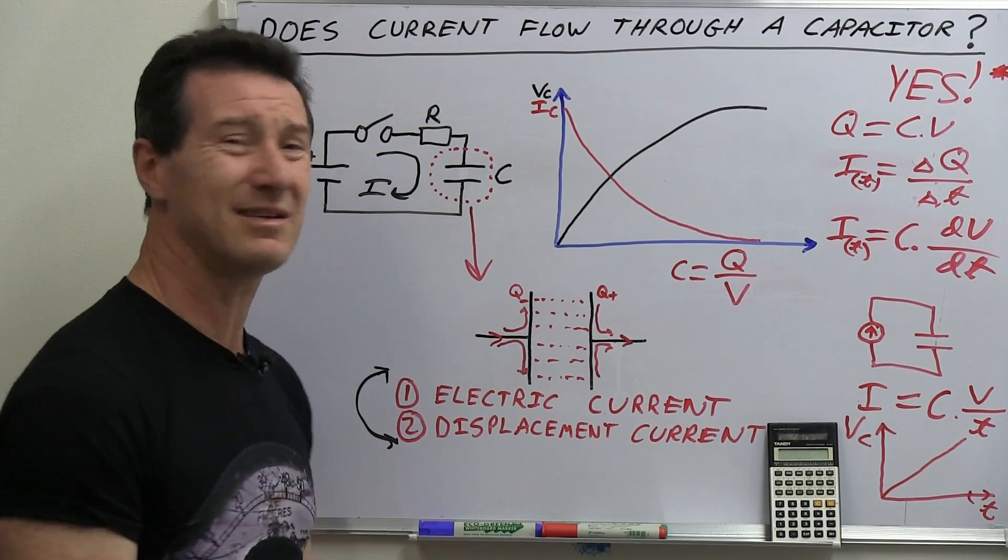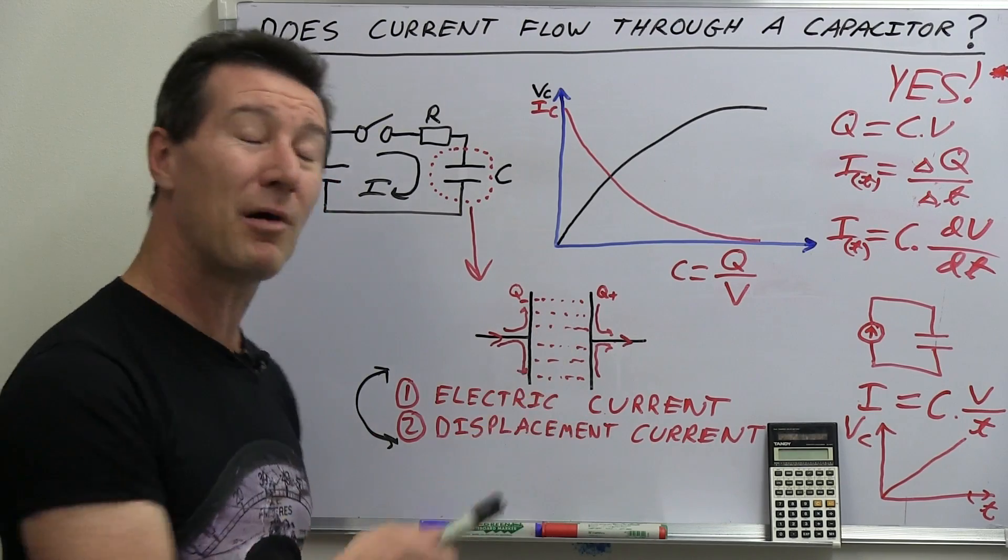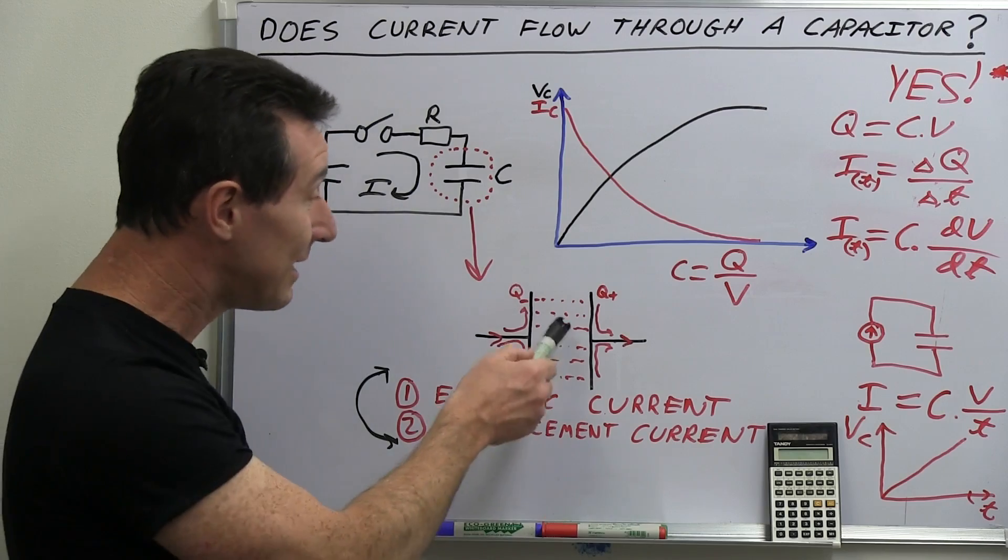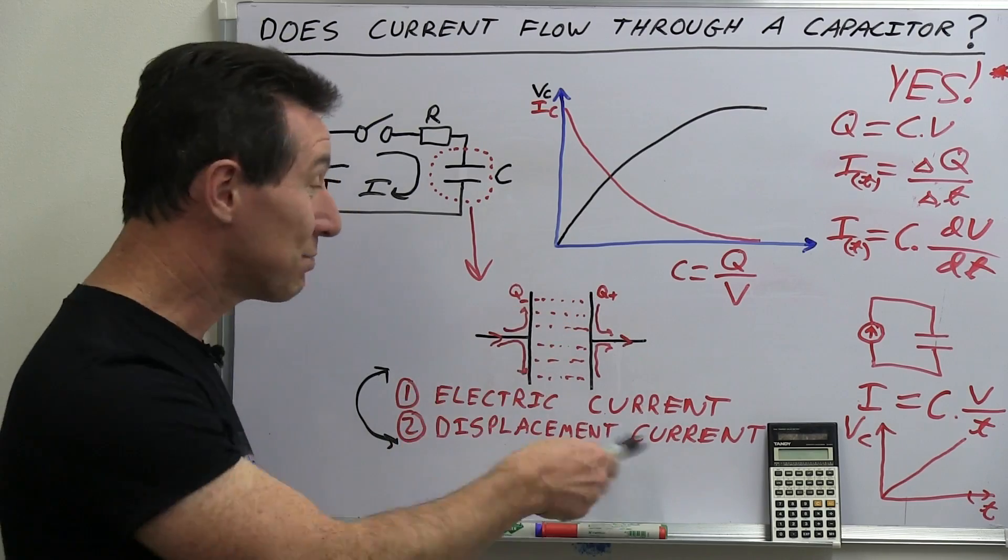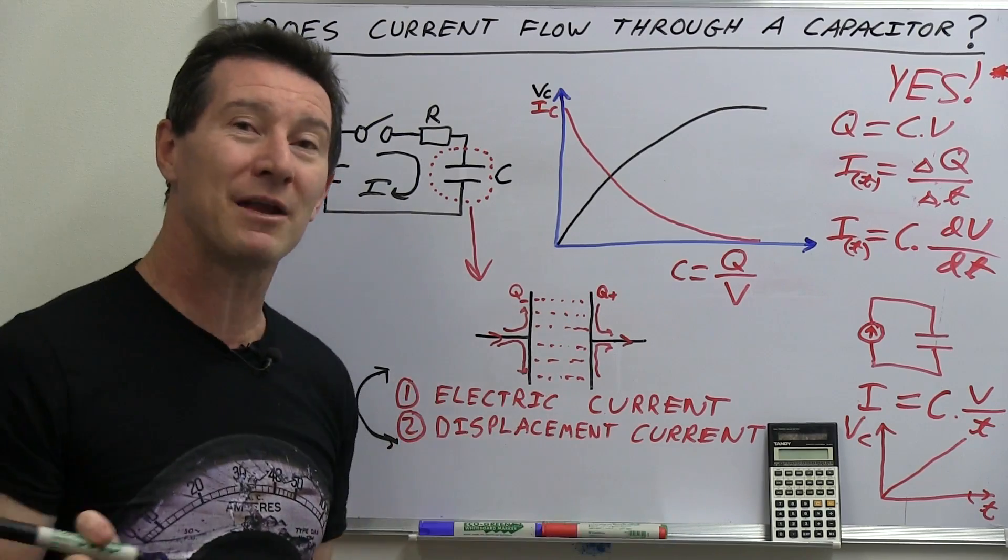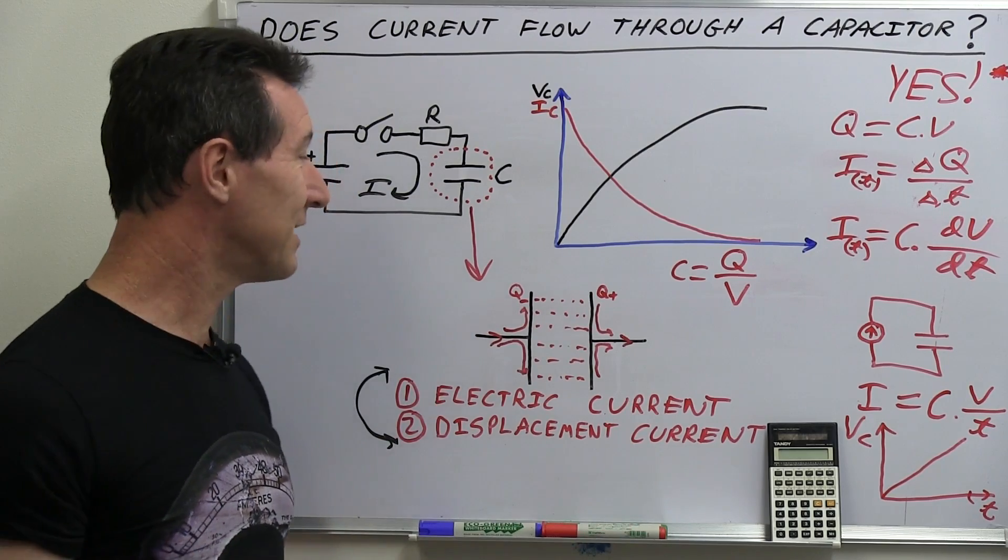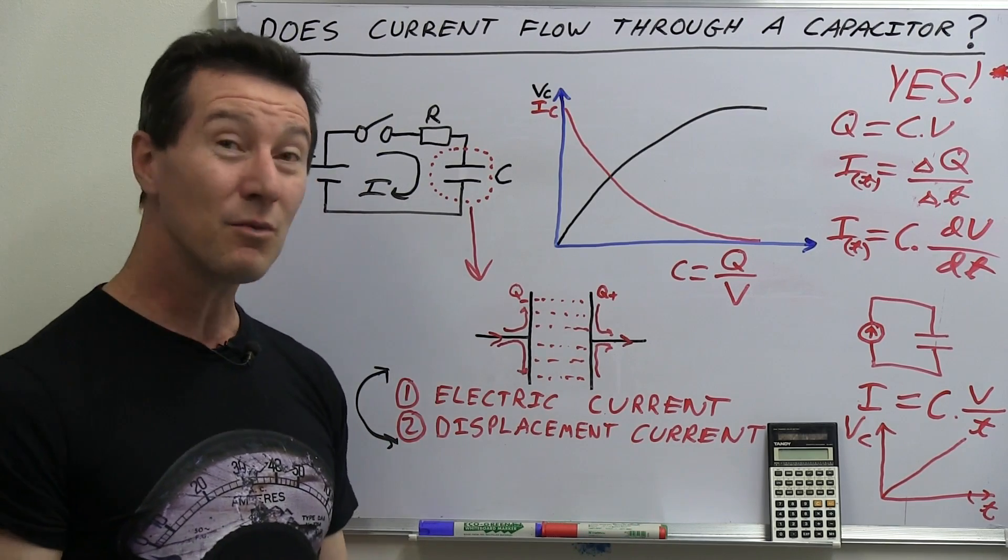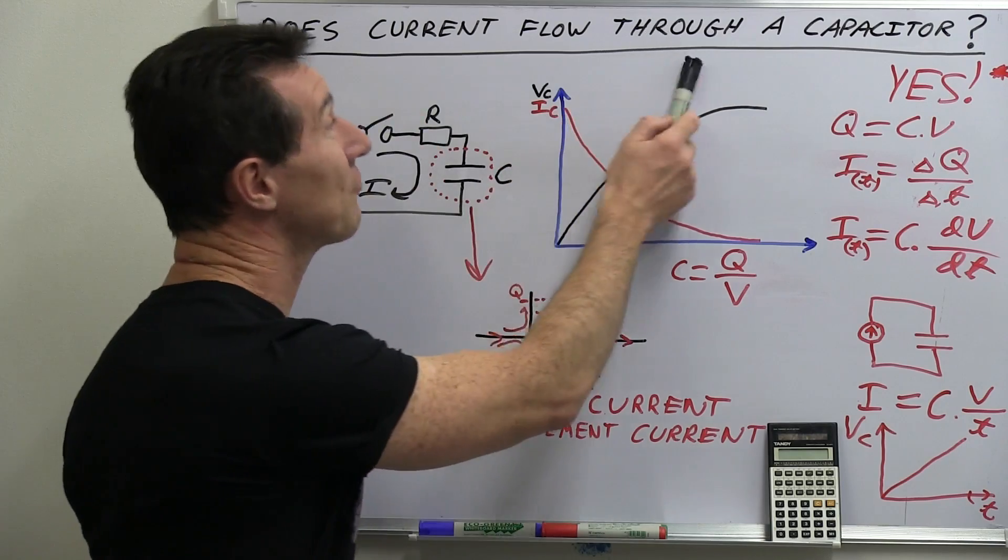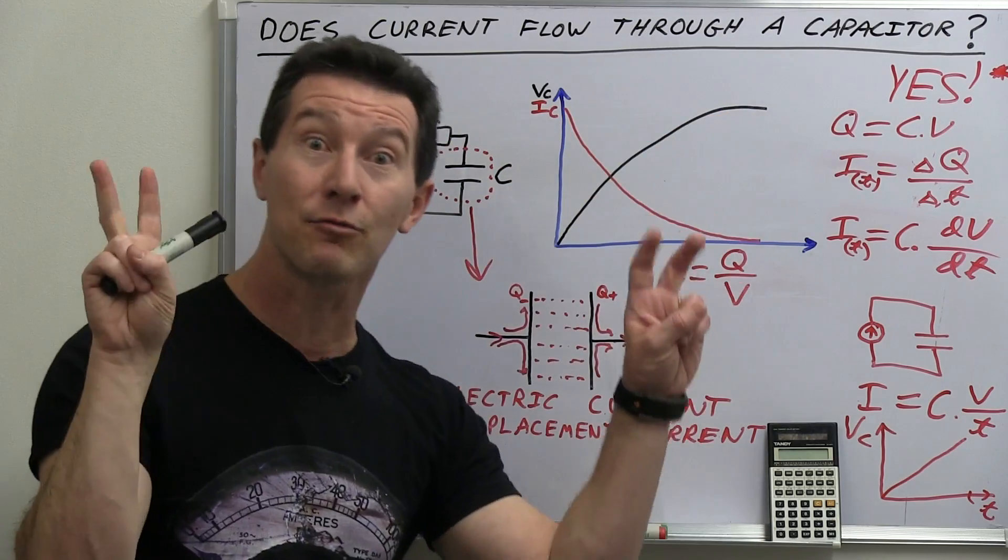Because you can't buy a displacement current meter and whack it in between the plates and measure the displacement current. It's a mathematical concept, effectively. So just, gah, don't worry about it. Electric current flows through a capacitor. Through. So theoretical physicists, go for your life. Me, I'm going back to the bench using my current meter to actually measure the current.